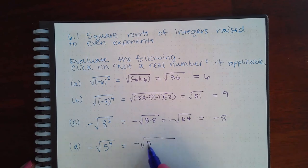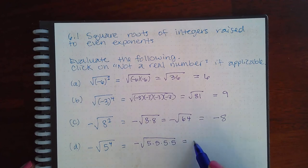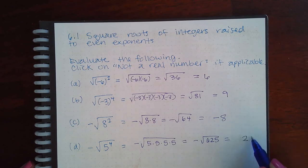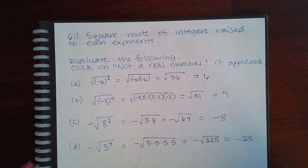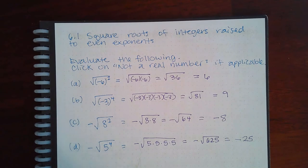Here we have to do 5 times 5 times 5 times 5, which I believe is 625, and then the square root of 625 is 25. But the negative carries along with it, so I get negative 25.